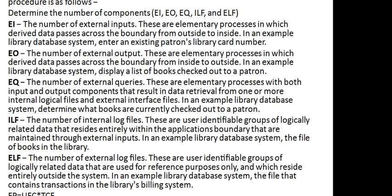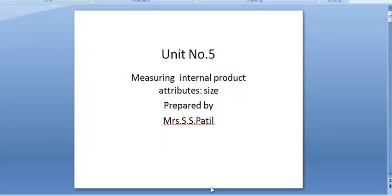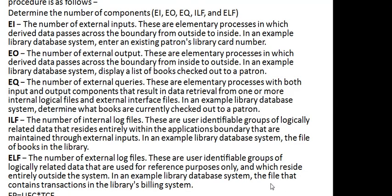The first component is EI (External Inputs) — an elementary process in which data passes across the boundary from outside to inside. For example, in a library database system, entering data to get a book involves an external input. EO (External Outputs) is the elementary process in which derived data passes across the boundary from inside to outside — for example, the library displaying a list of books checked out to a patron. EQ (External Queries) are elementary processes in which both input and output components result in data traveling from one or more internal logical files and external interface files — for example, a library database system determining what books are currently checked out.